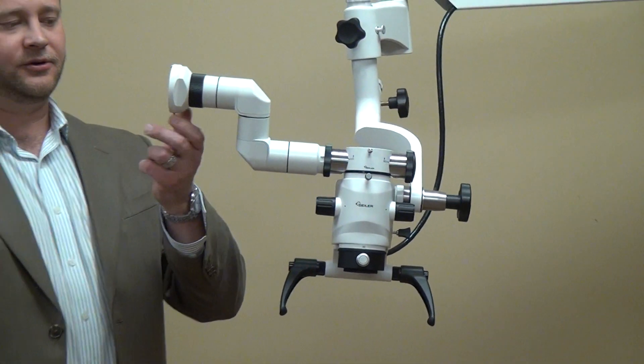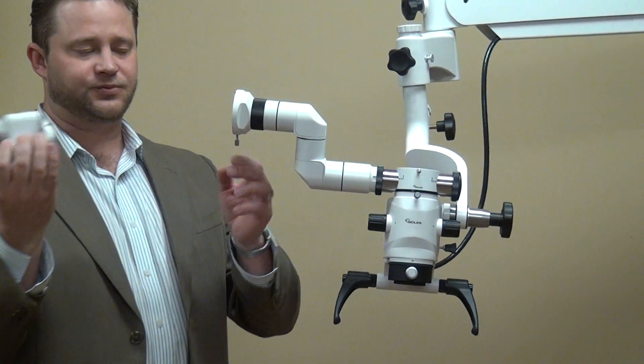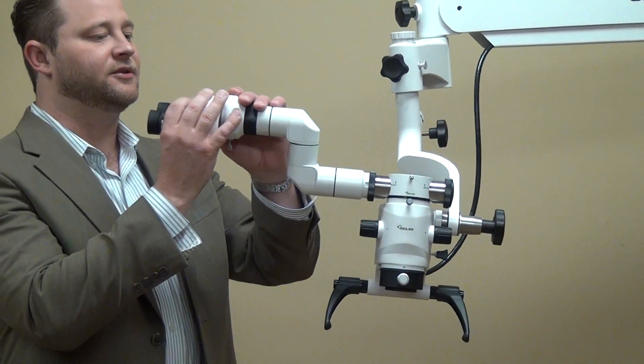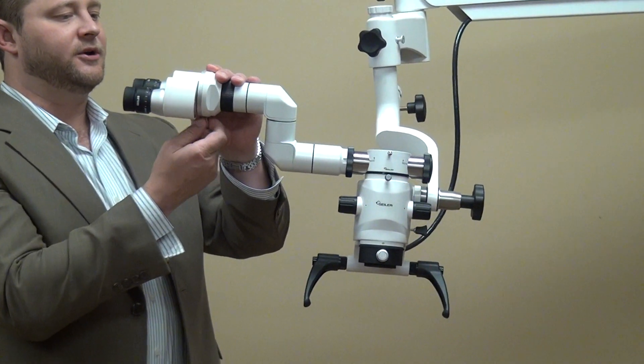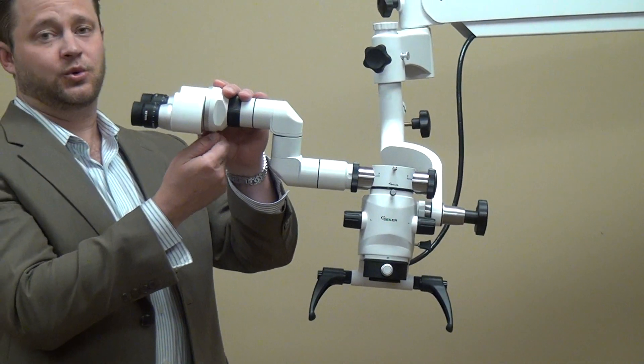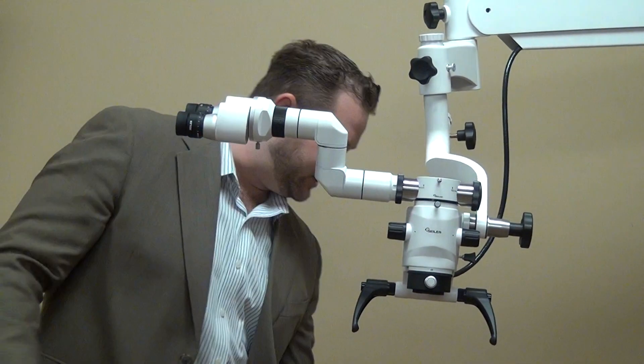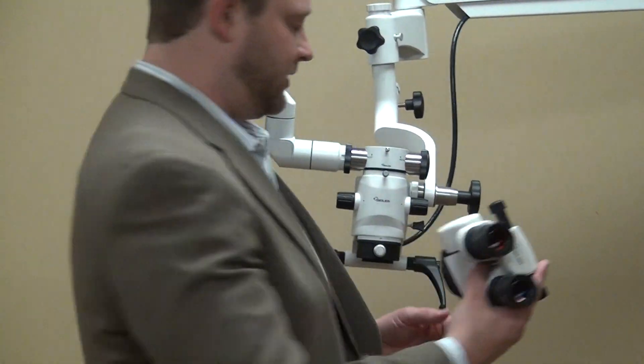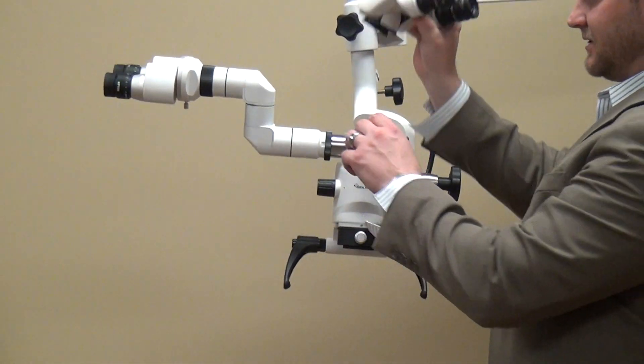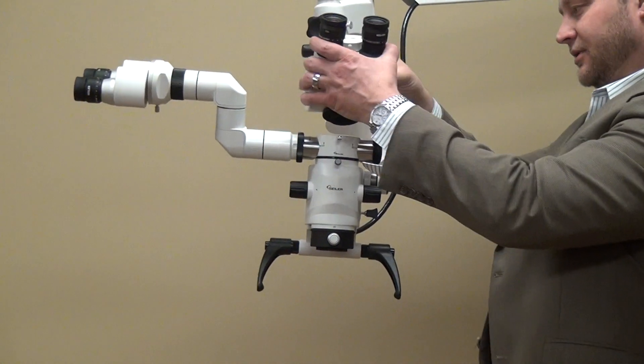And you put on your binocular head. We have just a simple straight binocular head. Remember we offer a 0 to 220 degree inclinable head that can go on, a fixed 45 degree inclinable head, or as we have here, a straight head.